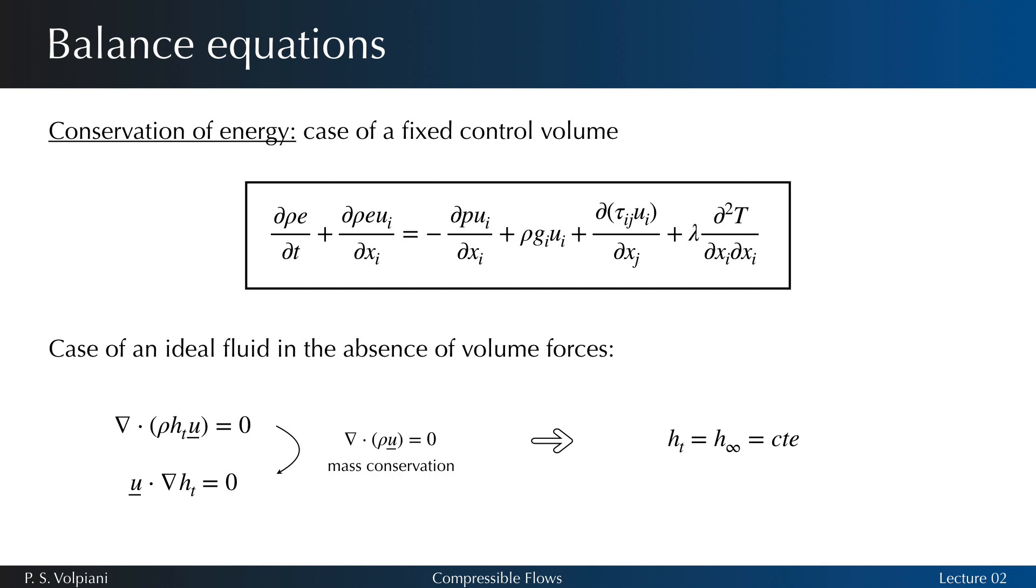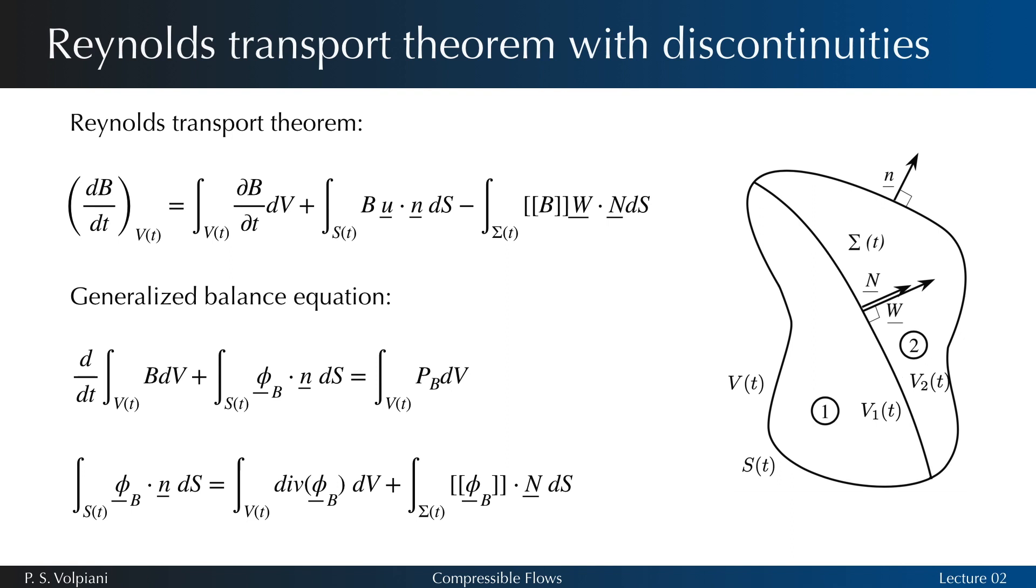The stationary energy equation for a perfect fluid flow with uniform generating conditions up to infinity is thus reduced to Ht equals H infinity equals constant. Therefore, the total specific enthalpy will remain constant in the flow unless heat is added into the system, if the flow passes by a combustion chamber, for example.